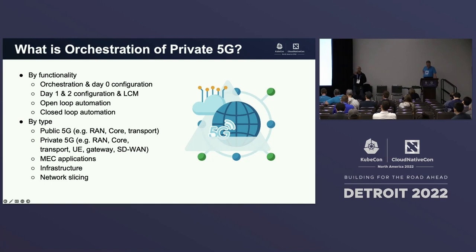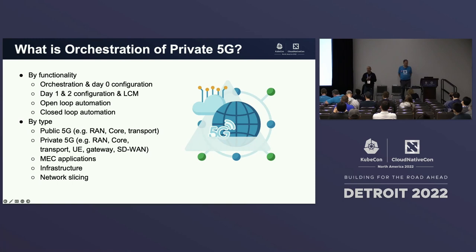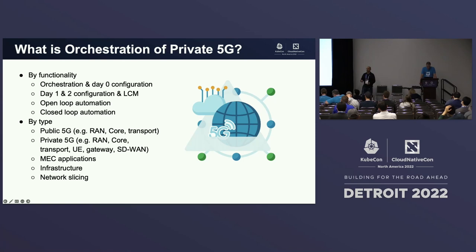We talked about the Kubernetes layer, but above that you have network functions — the RAN and the core — and then service orchestration on top. Orchestration of private 5G covers functionality and type. By functionality, it is orchestration and day-zero configuration — initial deployment of all network functions and setting them up. But day zero is just the beginning. The real challenge is day-one and day-two configuration and lifecycle management.